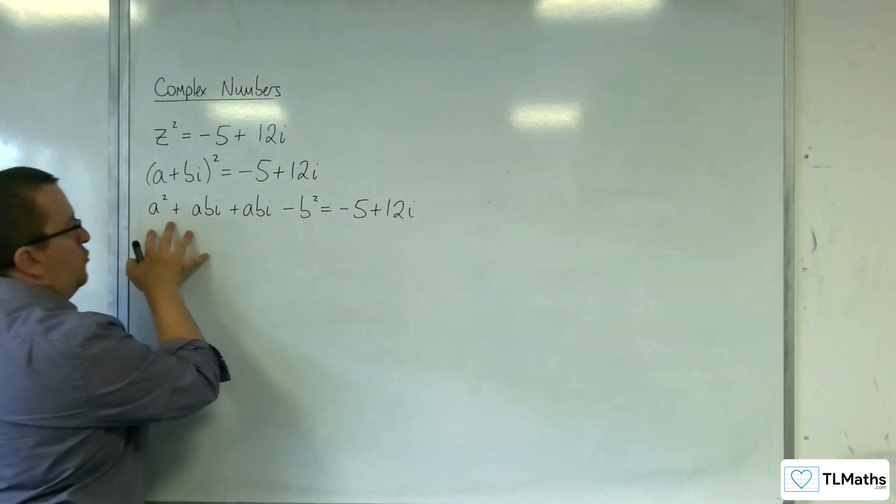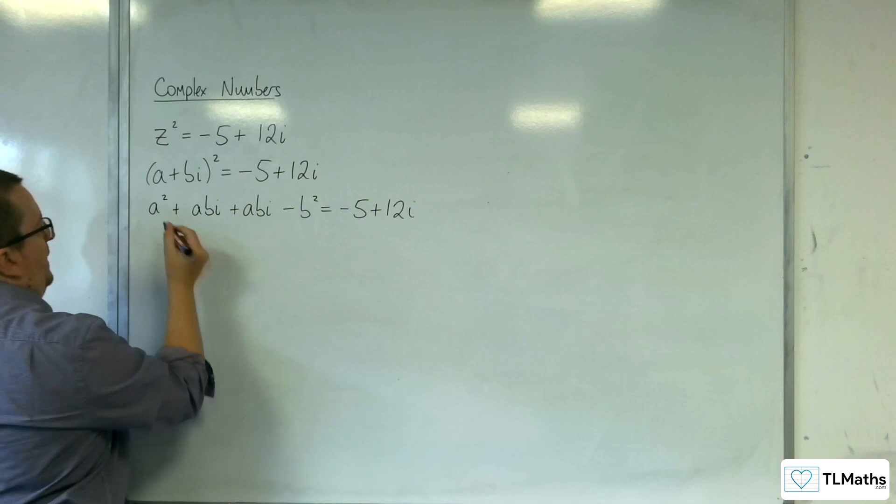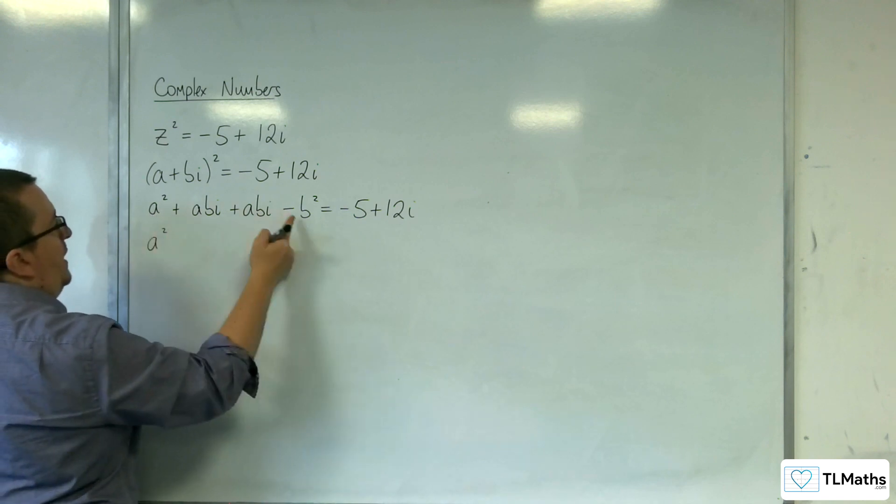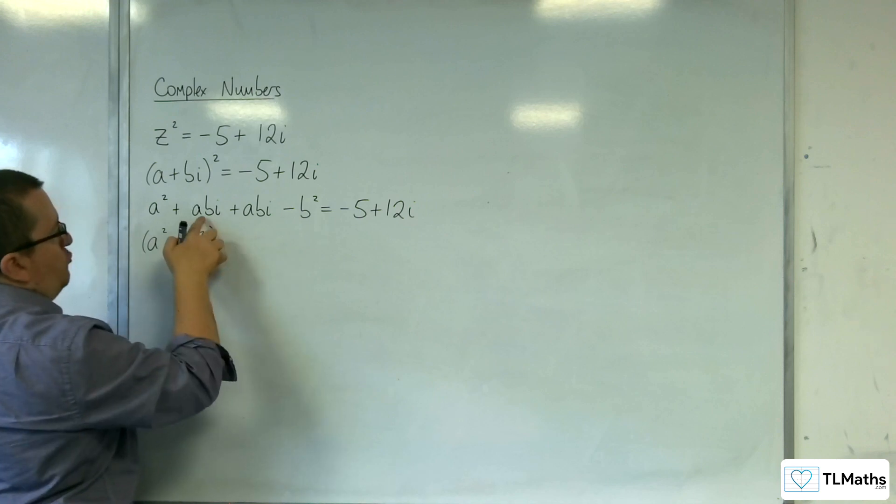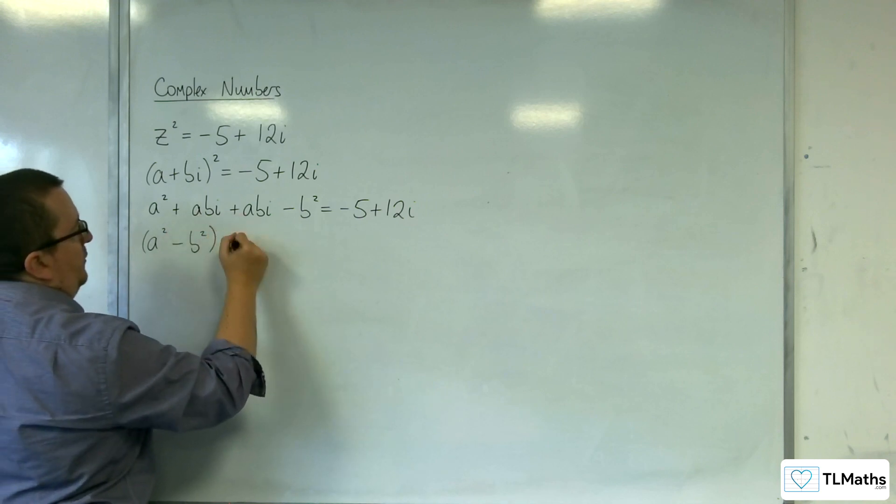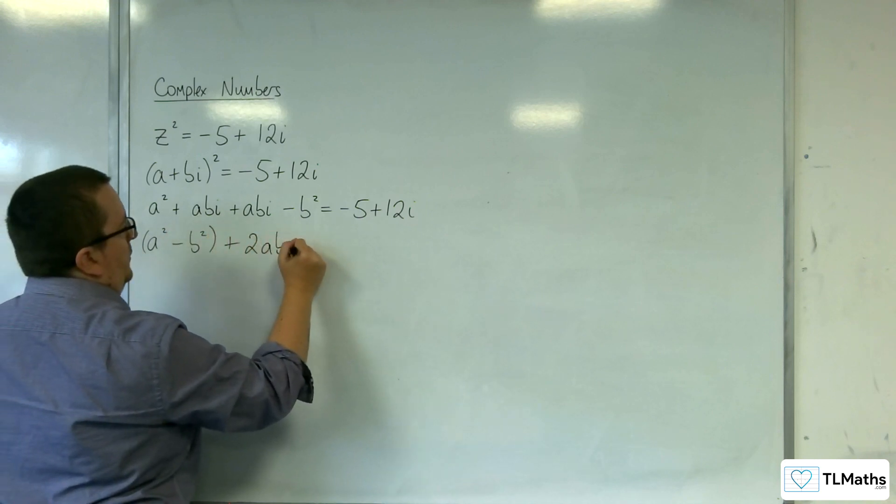So, if we group together the real parts on the left-hand side, we've got the a² and the -b². So that's your real part. The imaginary part is ab plus ab, so 2ab, and that's times the i.